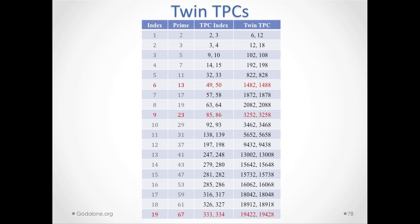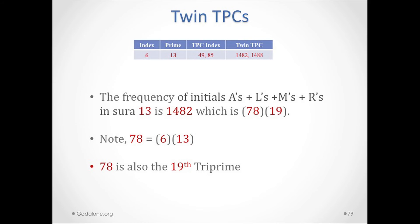Now we go to the 20 TPCs and see how they generate these parameters in the Quran. There are not too many of these 20 TPCs — as you go to higher indices, they get extremely large because the gap is so big. Line 6 corresponds to the index of prime number 13, which is 6, and corresponds to 1482 and 1488. The frequency of initial H+L+L+L+R in chapter 13 is actually 1482.